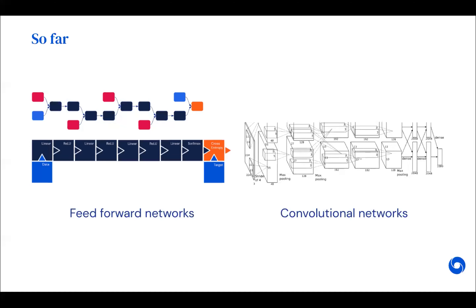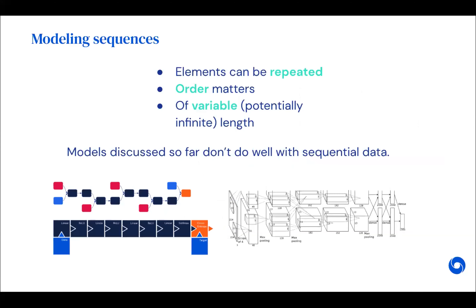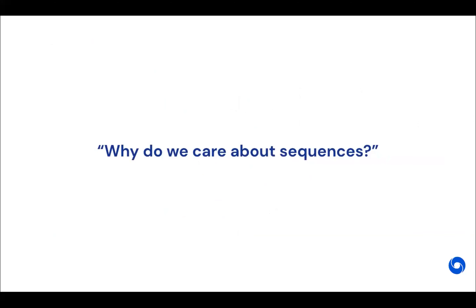So far you've seen feedforward networks and convolutional networks in previous tutorials. Recurrent neural networks build on top of what you've learned before, but those networks are not so great at modeling sequences. A sequence is a collection of elements where the elements can be repeated — think of the frames of a video. These sequences can also be variable length: they might have 10 elements or a million.